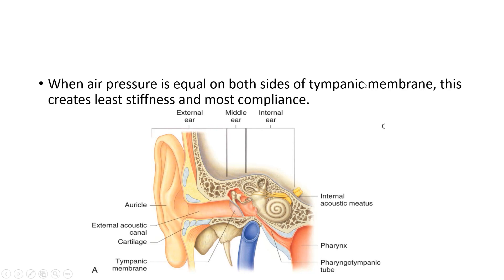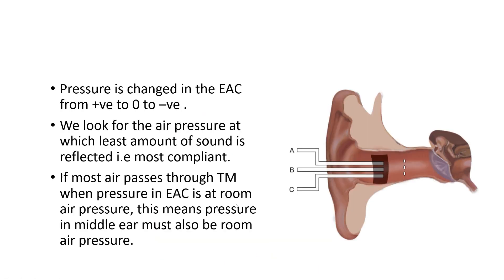When air pressure is equal on both sides of the tympanic membrane — that is on the external auditory canal and the middle ear cavity — this creates the least stiff tympanic membrane. At that point, the tympanic membrane is least stiff and most compliant. Compliance is the inverse of resistance, meaning the tympanic membrane captures or absorbs the most amount of sound and then transmits it. When the pressure in the external auditory canal is any greater or lesser than the pressure in the middle ear, the tympanic membrane becomes stiff. Based on this principle, we use tympanometry to create a tympanogram.